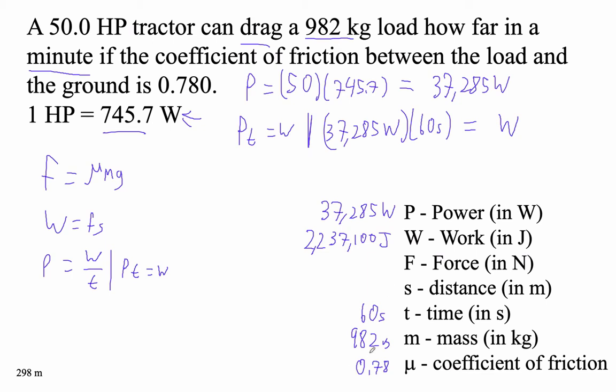What do we have? Oh, you know what? We've got the coefficient and the mass, so we can find the force. We could have done that. We could have started with that. So the force is equal to 0.78 times 982 times 9.81. I can do this. That is 7,514.0676 newtons.